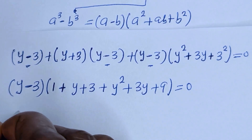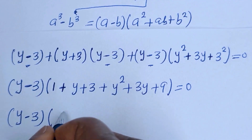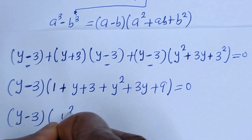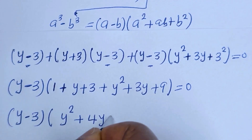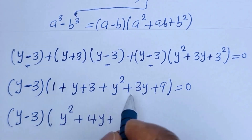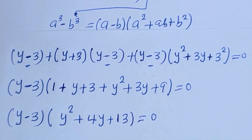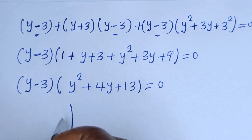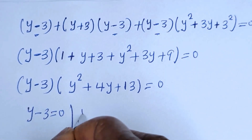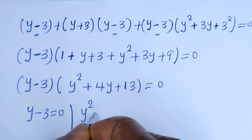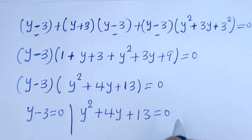Simplifying inside the bracket: y squared plus 3y plus 3y plus 3 gives 4y, plus 9 plus 3 plus 1, that is 13. So we have y minus 3 times y squared plus 4y plus 13, equals 0. There are two cases: the first case is y minus 3 equals 0, and the second case is y squared plus 4y plus 13 equals 0.